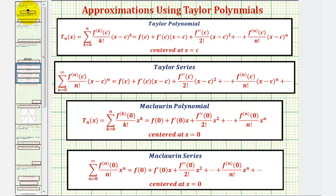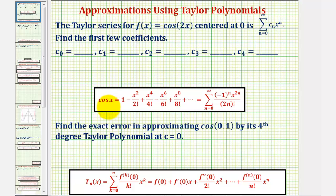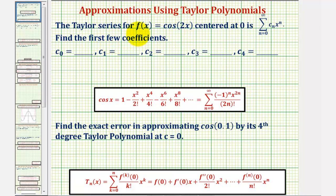Going back to our question, if we knew the power series for cos(x) centered at zero, we could simply find the Taylor series by substituting 2x for x. But we'll go ahead and apply the formula to find the series and polynomial. The highest degree term will be degree four, so we'll need to find the first four derivatives of f(x).